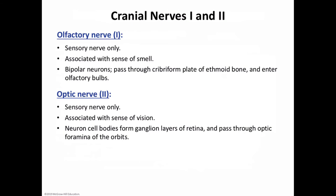Cranial nerve number two is the optic nerve. The optic nerves are sensory and lead from the eyes to the brain — they are associated with vision. The neurons of the ganglion layer of the retina form these nerves, which pass through the optic foramina of the orbits. We covered more of this with visual pathways in the brain in chapter 12.